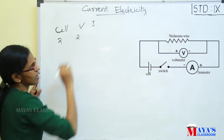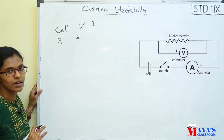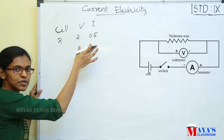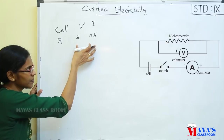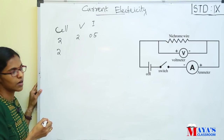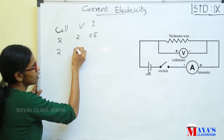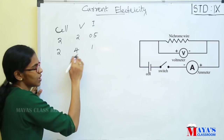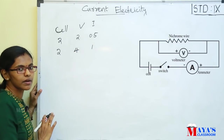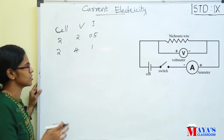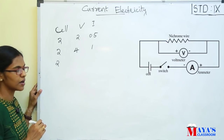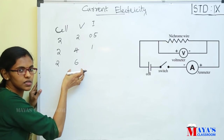Then the current will flow. Suppose it will be 0.5 A, because we are reading the current in the ammeter. If we add one more cell in the circuit — two cells — the potential difference is 4 volts. With three cells, the potential difference is 6 volts.